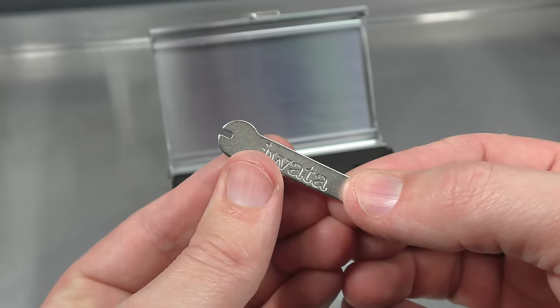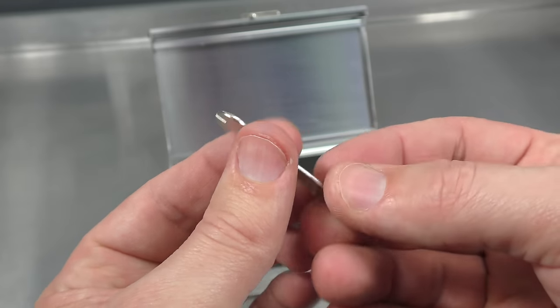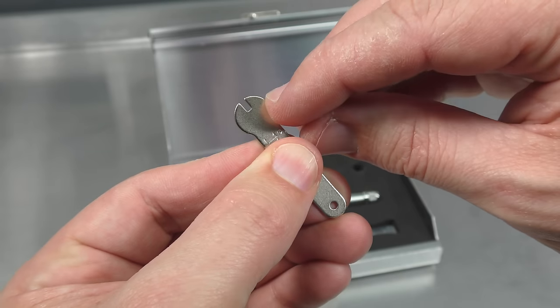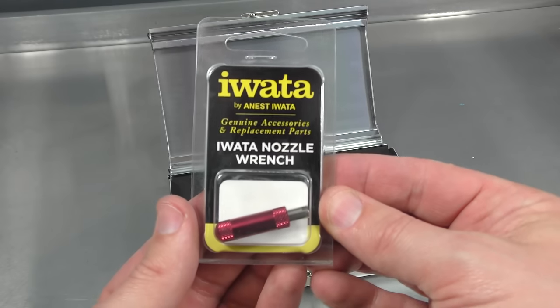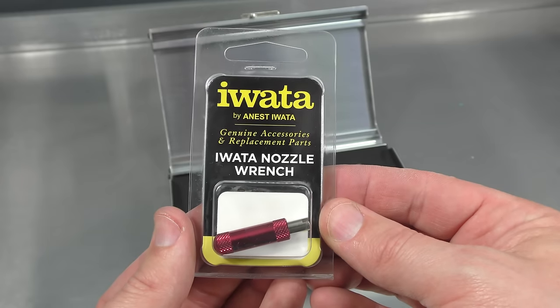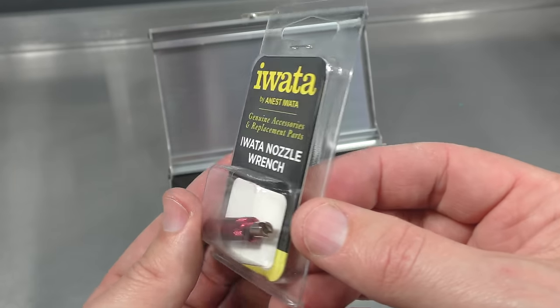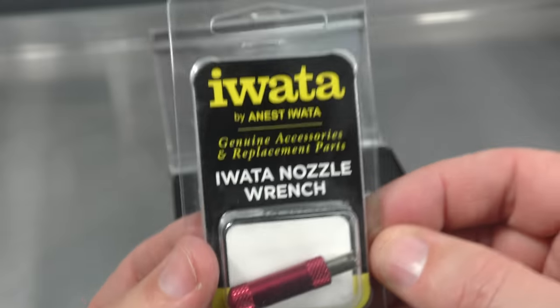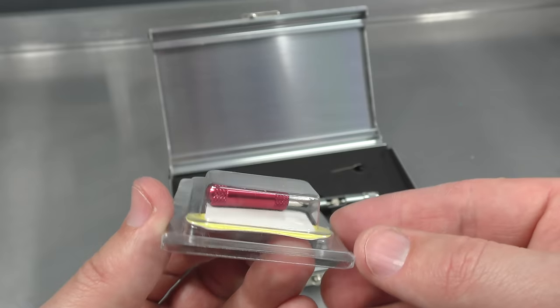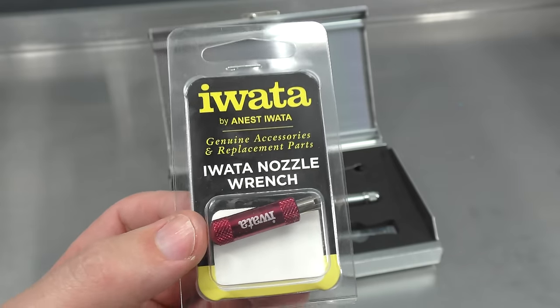We have the Iwata nozzle wrench. I would not be using this for my Micron, it's too dangerous, too easy to snap the thread when replacing your nozzle. I would instead highly recommend the Iwata nozzle wrench. This one fits over the front of the airbrush. It's a lot safer to swap them out, clean them, and remove your nozzle. Go with this one instead of the one that comes with it.